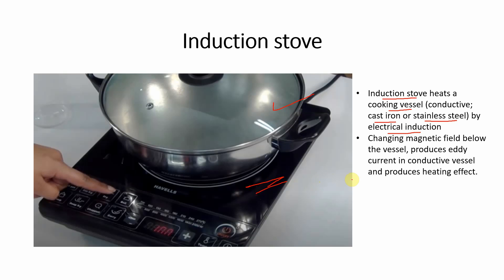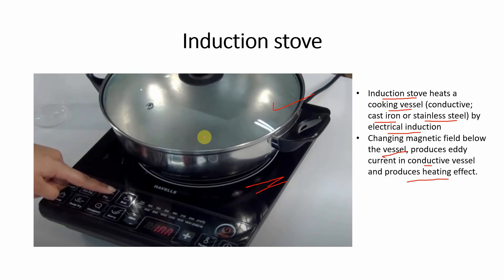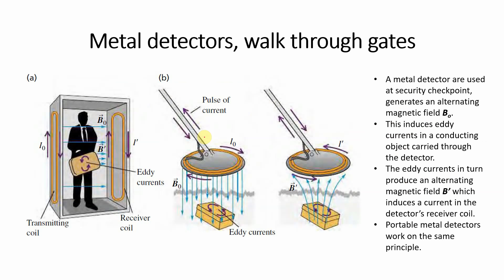ان coils کے اندر magnetic field change ہو رہا ہوتا ہے — ایک varying magnetic field ہوتا ہے۔ جب ہم یہ conductor اس varying magnetic field میں رکھتے ہیں تو اس conductor کے اندر eddy current produce ہو جاتا ہے، اور eddy current produce ہونے کے نتیجے میں heating effect ہوتا ہے اور cooking کا process start ہو جاتا ہے۔ Changing magnetic field below the vessel produces eddy current in the conductive vessel and produces heating effect۔ چونکہ یہ utensil conductor کا بنا ہوا ہے اس میں بے شمار free electrons ہیں۔